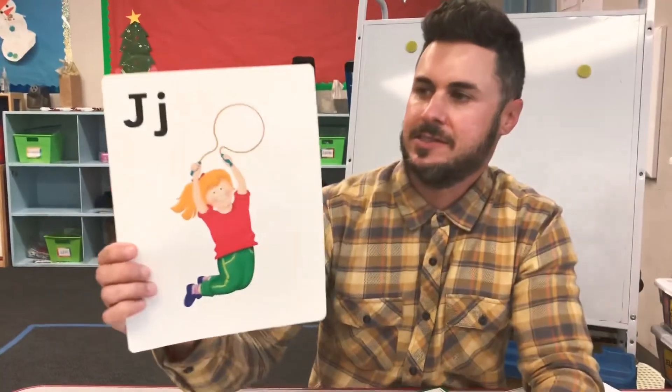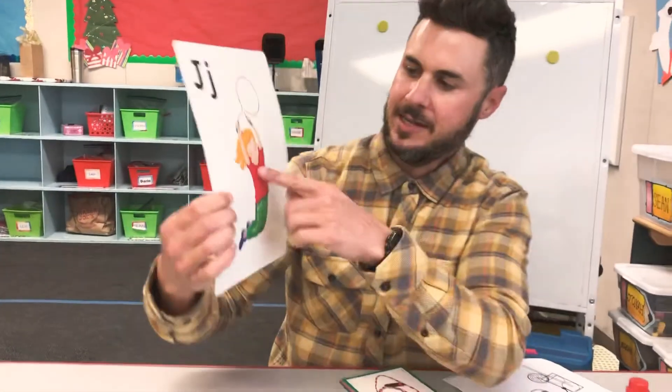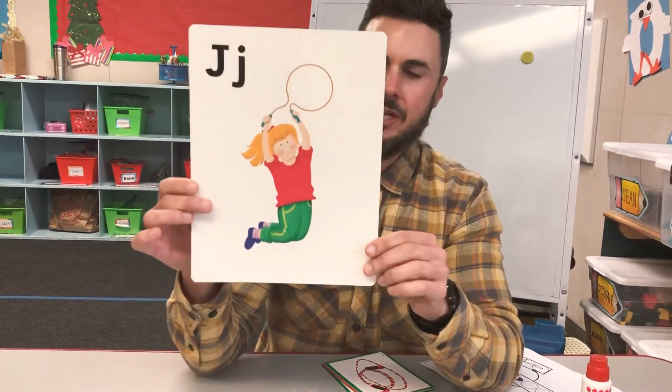So today we introduce a new letter. This is letter J. Say hello to jumping Jill. J, the sound for J is J, J, J. Try that at home.